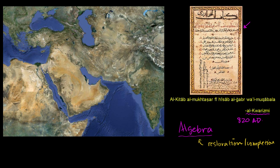I don't know Arabic, but I do know some languages that seem to have borrowed a little bit from Arabic. This says Al-Kitab — Kitab means book in Urdu and Hindi. Al-Muqtazar, I think that means compendious. Fi-Hisab — Hisab means calculation in Hindi or Urdu, so this part is calculation. Al-Jabr — this is the root, this is the famous algebra.